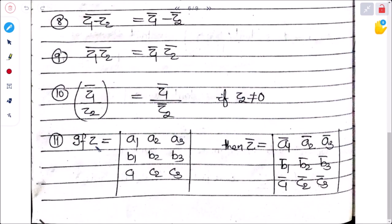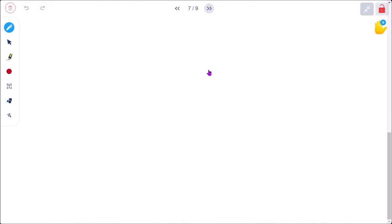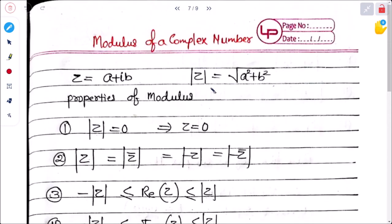Property 11: if z is a 3×3 determinant with entries a₁, a₂, a₃, b₁, b₂, b₃, c₁, c₂, c₃, then z̄ equals the determinant with all entries replaced by their conjugates: ā₁, ā₂, ā₃, b̄₁, b̄₂, b̄₃, c̄₁, c̄₂, c̄₃.